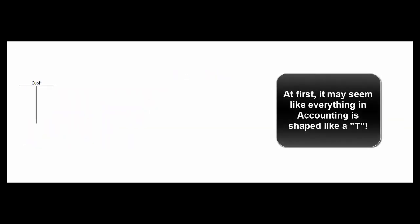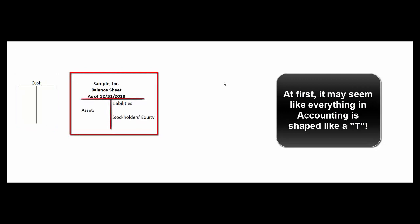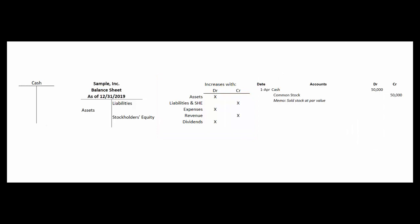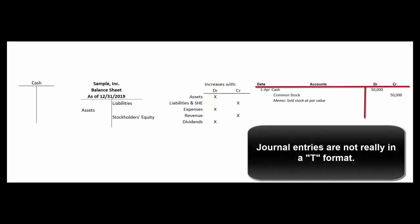One of the challenges of those first few days of your accounting class is it may seem like everything looks like a T. There's the T-account that we're going to talk about today. There's the balance sheet with assets on the left-hand side, liabilities and owner's equity on the right-hand side. When you're learning the rules for debits and credits you might make yourself a little cheat sheet, and students often think that looks like a T-account. In fact, students are so anxious to make T's appear they'll often fill out their first journal entries as if they are in the form of a T. But there's really only one T-account, and that's what we're going to talk about today.